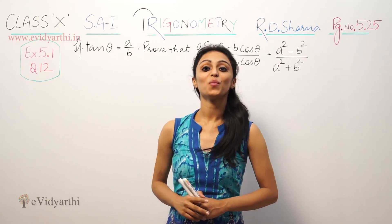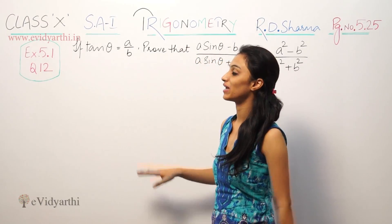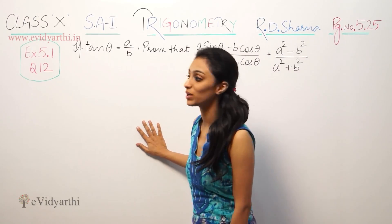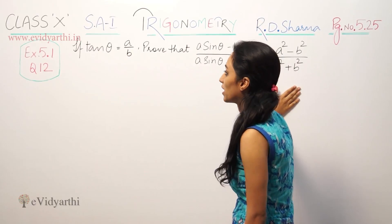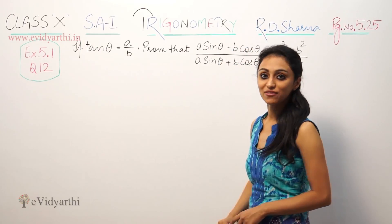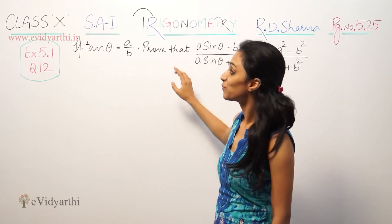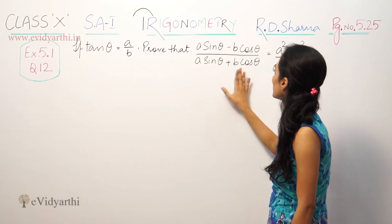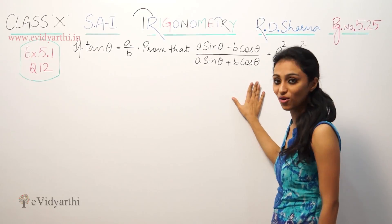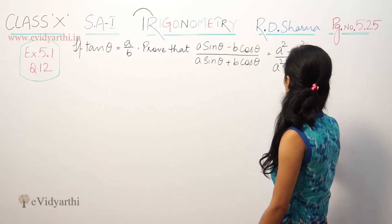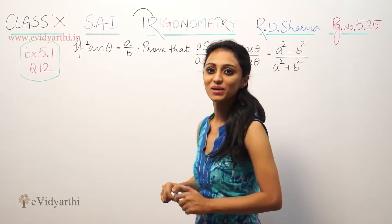Hey, what's up? This is Kuchpu with another question of trigonometry. This is question number 12, exercise 5.1, page number 5.25 of RG1. The question is: if tan theta is equal to a by b, prove that a sin theta minus b cos theta upon a sin theta plus b cos theta is equal to a square minus b square upon a square plus b square.